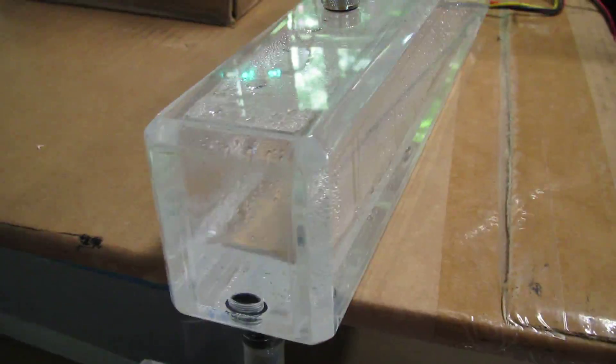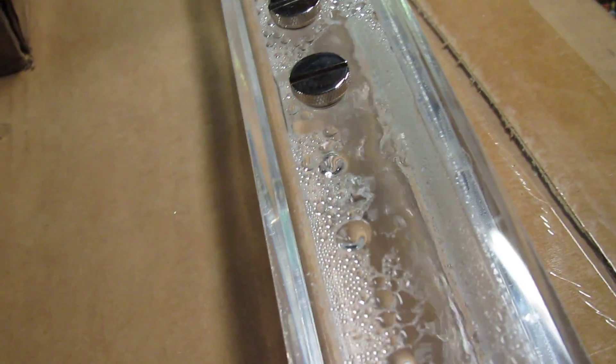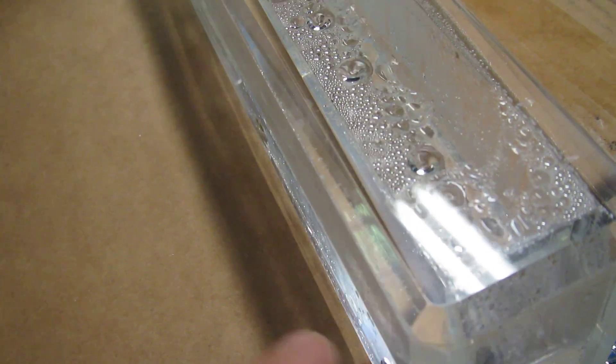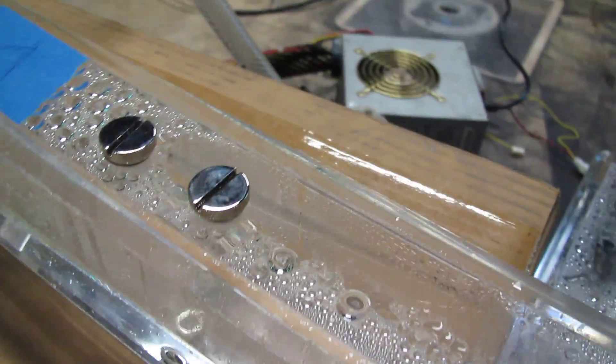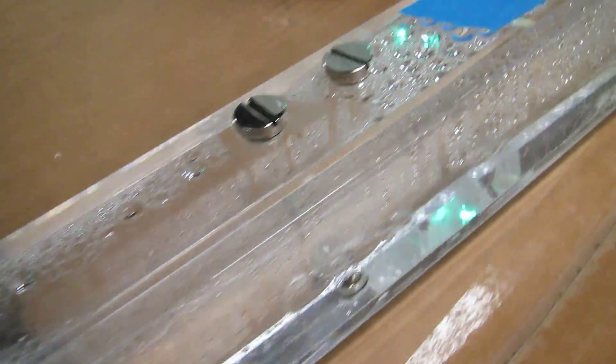But they are pretty much - I'm trying to see if I can get an angle where you can see the rainbows. Just like a prism, each one of these little edges, if you catch it just right in the light, makes little colors and stuff.